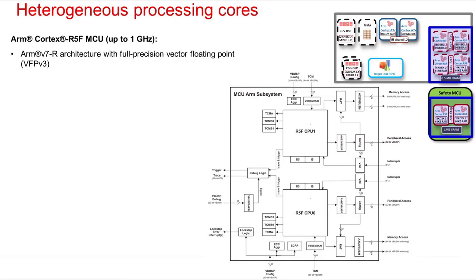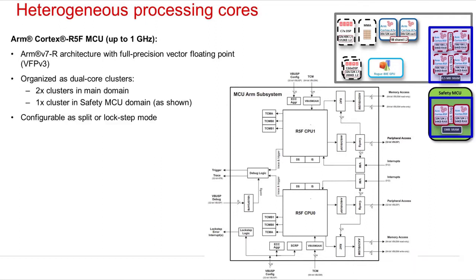The main MCU or microcontroller unit on the Jacinto 7 SoC is the ARM Cortex-R5F. This ARM V7R compliant core with vector floating point support would be the primary choice to run safety and control related software on real-time operating systems such as AutoSAR. The MCUs are organized in dual clusters which can operate independently in split mode or as pairs in lockstep mode, where the second core acts strictly as a checker to verify no faults are present on the primary core.